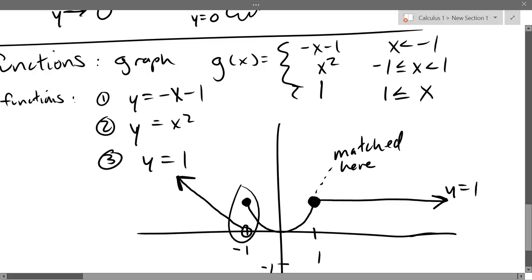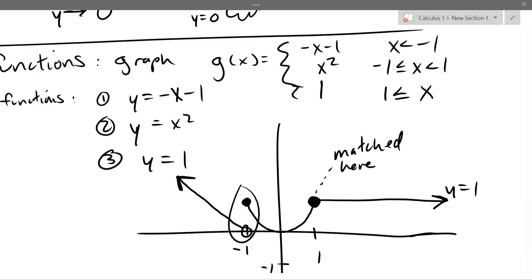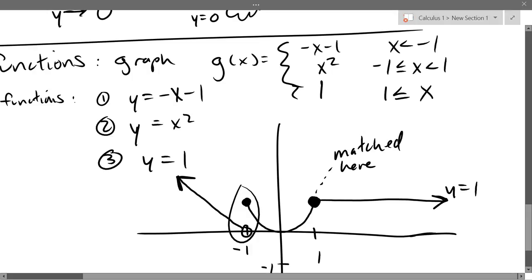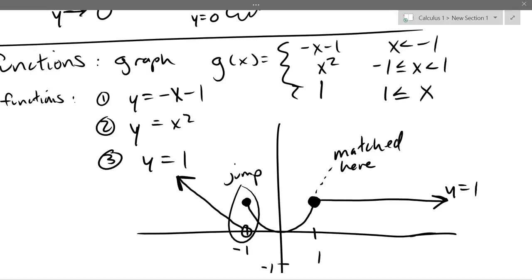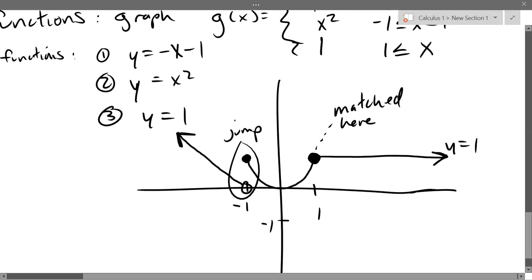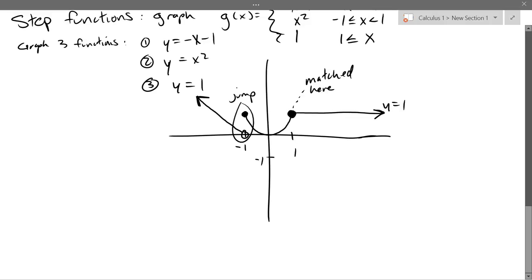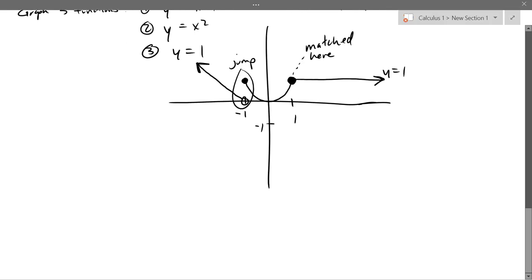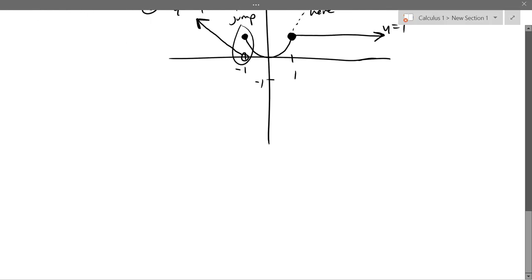So there's the graph: parabola in the middle from negative 1 to positive 1, and the line with slope negative 1. The three pieces matched up perfectly on one side, but obviously did not match on the other — and we're going to find out there's a big difference. This mismatch is what we call a jump, which will be called 'not continuous,' and when they match it will be called 'continuous.' Next up: increasing, decreasing, even, and odd — all function properties.